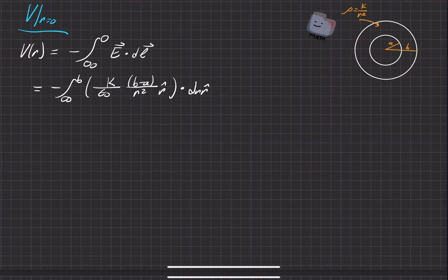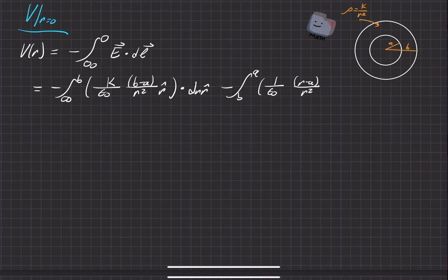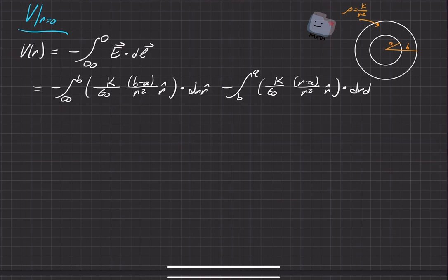Now we do the section from B to A — inside the shell. We found in the previous problem that the electric field inside the thick spherical shell depends on wherever you are within the shell minus the inside radius A, pointing in the R-hat direction dotted with DR. Then the third piece is from A to zero. Inside the hollow region, the electric field is zero — from Gauss's law, the charge enclosed is zero since it's hollow. So the contribution to the potential from this innermost portion is zero.